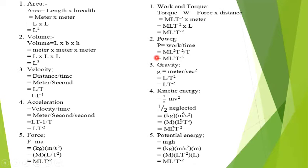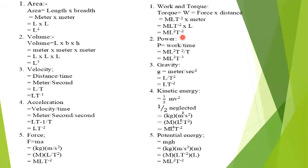The same goes for work and torque. The formula for work is force into displacement. Force dimension is MLT⁻², and displacement is in meters, symbol capital L. So L into L gives L squared, and the final answer for work and torque is ML²T⁻².